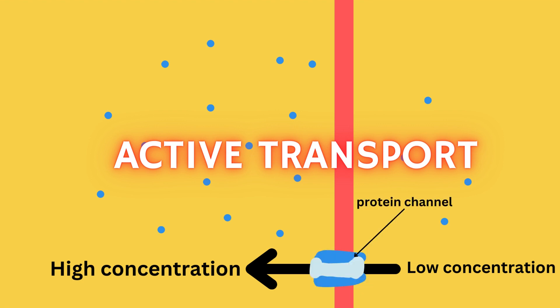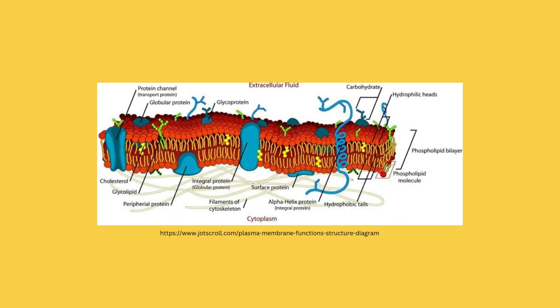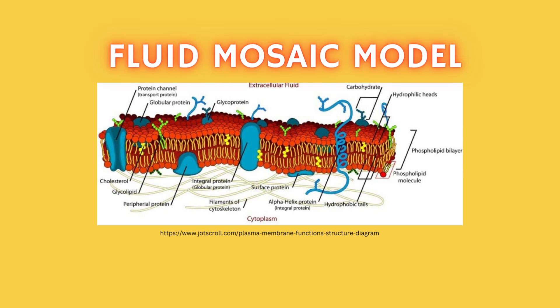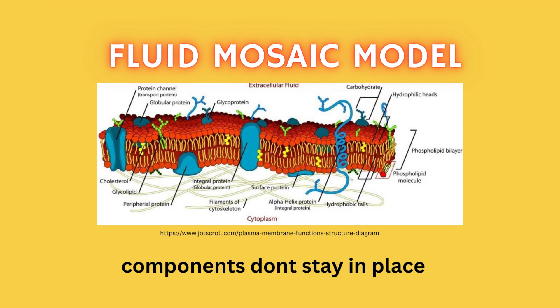Active transport also takes place with the help of proteins embedded within the plasma membrane. Because a bunch of proteins, steroids, glycoproteins, and glycolipids are embedded within the cell membrane, it is said that the cell membrane has a fluid mosaic model, as there are a mixture of items within the membrane, and it is fluid because these components do not stay in place and they actually move around in different directions.